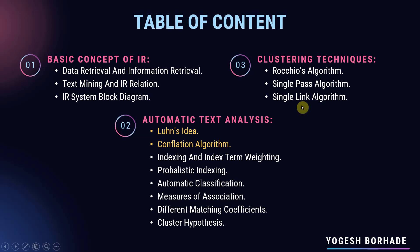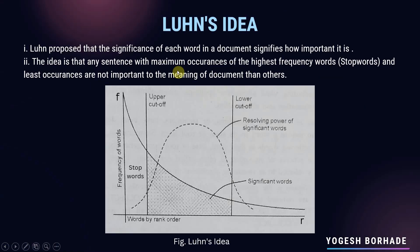We'll start with Loon's idea. Loon proposed that the significance of each word in a document signifies how important it is. For example, if you have typed a query in the search box — say, 'how to download an app from Play Store in Android' — the significance of each word in that sentence determines what role that word plays in the searching process. If it plays an important role, it is more significant; if not, it is considered insignificant.